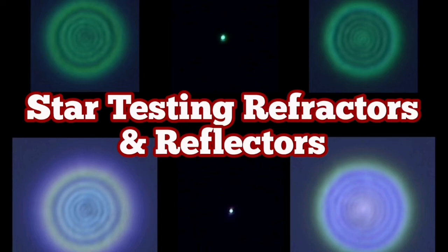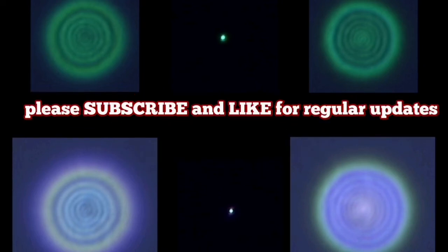Start testing refractors and reflectors. If you have a reflector and you try it this time of the year, everybody tries it to look at a bright target like Sirius. This is what you see. This is with the SkyWatcher FlexTube 250P, a 10-inch telescope.